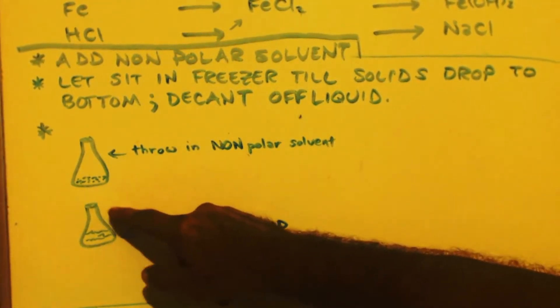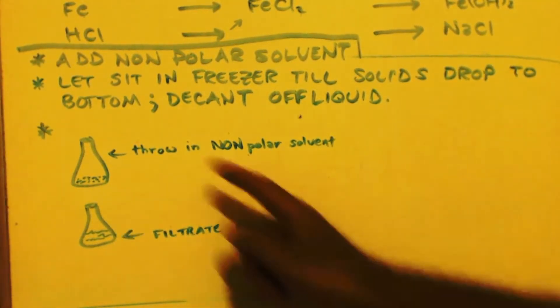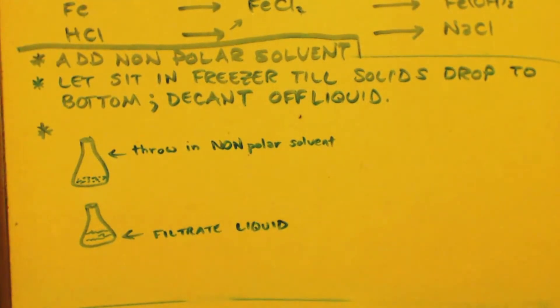Then decant it out into this, your mother liquor. Put some more non-polar solvent in there, grab it and shake it up. Cover it back up, put it in the freezer. Repeat that process like three or four times.